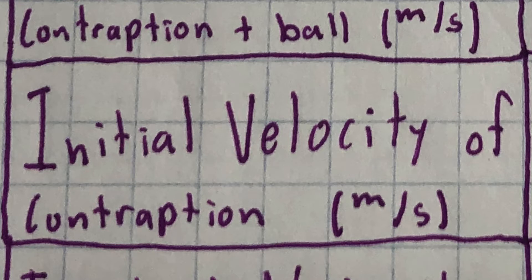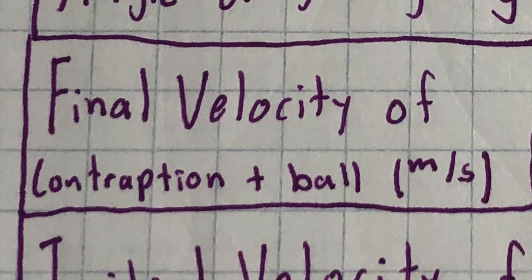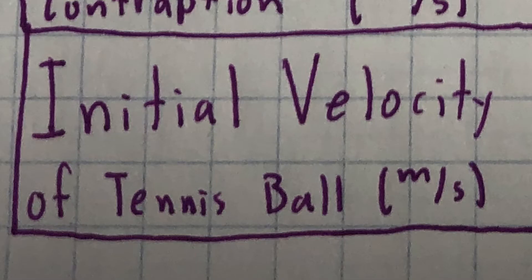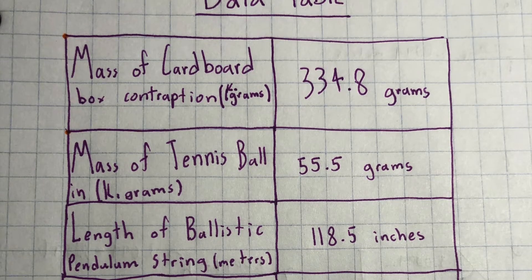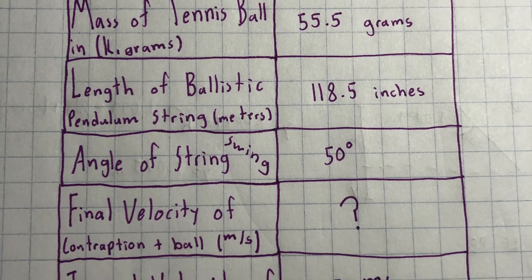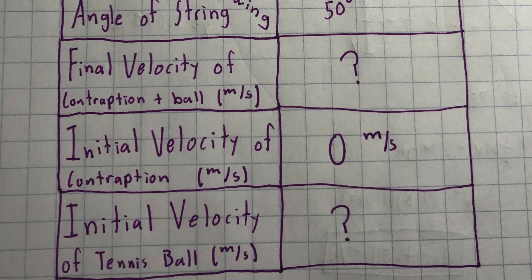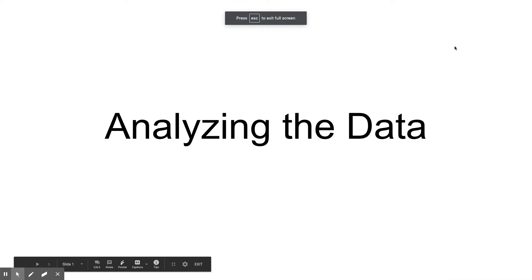We'll need the initial velocity of the contraption which is 0 meters per second because it is starting at rest. This leaves us with two more spots on the data table: one is the final velocity of the contraption and ball, and through our angle of swing we can find that, and then finally the initial velocity of tennis ball or how fast I serve. With all of those calculations and observations we have organized this into one complete data table. So now that we've gathered all of our data we need to analyze it and find the speed of my serve through multiple physics calculations.